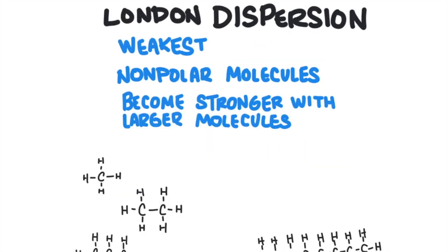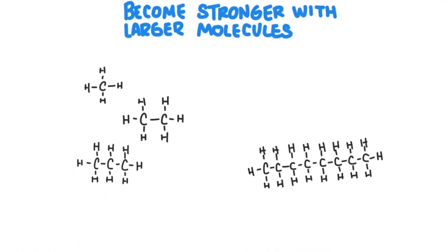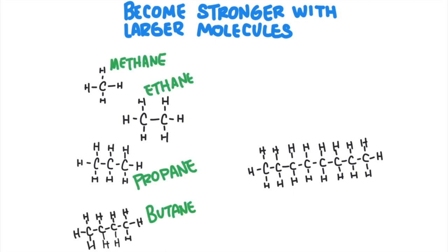London dispersion forces are the weakest of all the intermolecular forces. They exist between all molecules but are only really evident between non-polar molecules. Dispersion forces form when the positively charged nucleus of an atom of one molecule attracts the negatively charged electrons of an atom in another molecule — this is a very weak attraction. However, the larger the atom or molecule, the larger the attraction will be. Methane, ethane, propane, and butane are all gases because their molecules don't stick together very well — the forces of attraction are very weak and they're very small molecules. Octane, on the other hand, is a liquid at room temperature because it's a much bigger molecule and the dispersion forces are much stronger.